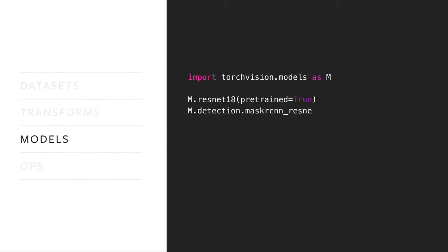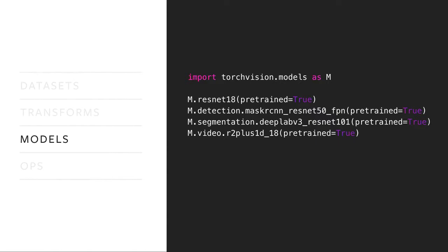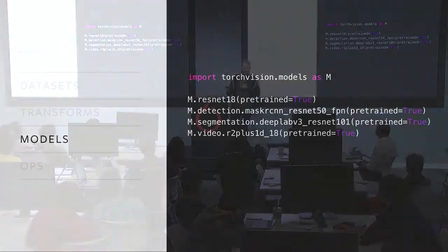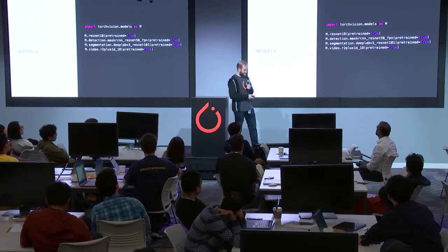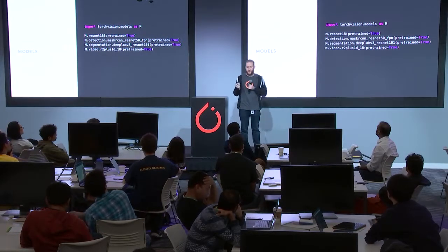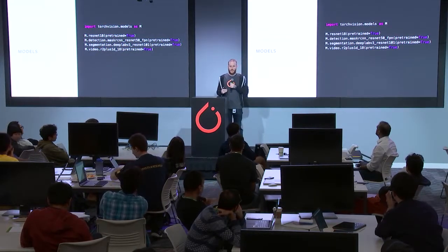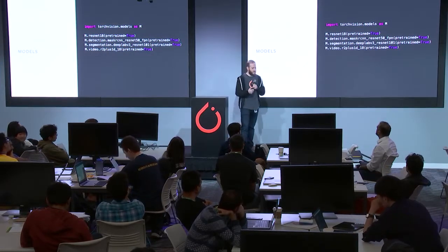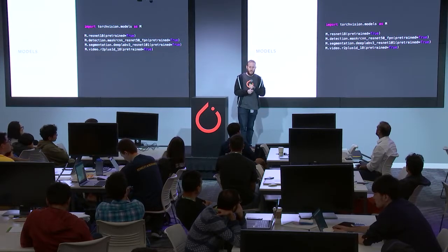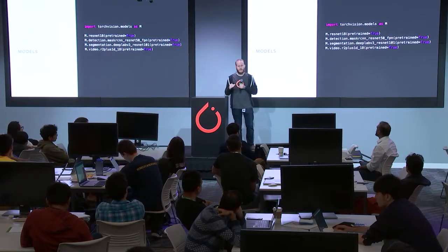We have models, and from the 0.3 release onwards we started to increase the scope of tasks — not only classification models but also detection, segmentation, instance segmentation, keypoint detection, and more recently video. All of them have pre-trained weights trained on large datasets which can greatly bootstrap your research, and the goal of those models is to be easy to use. We might not expose all possible options, but the implementations are meant to be simple.